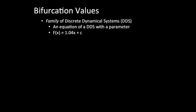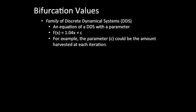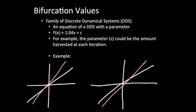That's our parameter, and all of the possible different values of C give us a family of discrete dynamical systems, and that's what we're going to call this. So the parameter C can actually be the amount that is either harvested or stocked into this population model, if that's what this dynamical system is representing. For example, these two dynamical systems both belong to the same family of discrete dynamical systems.